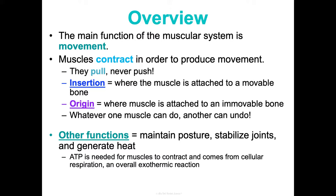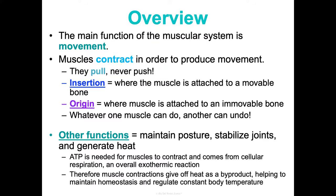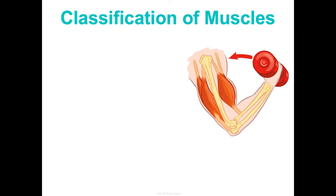ATP is needed for muscles to contract — there needs to be energy to do something. We get ATP from breaking down carbohydrates like glucose during cellular respiration, and cellular respiration is overall an exothermic reaction. Therefore muscle contractions give off heat as a byproduct of doing cellular respiration to provide the ATP for the contraction, and so they help maintain homeostasis and regulate constant body temperature, which is often overlooked but super important.